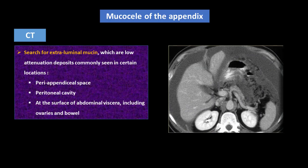When identifying mucocele on CT, a search for extraluminal mucin is mandatory, which are low attenuation deposits commonly seen in certain locations like the periapendiceal space, peritoneal cavity, and at the surface of ovaries and bowel.